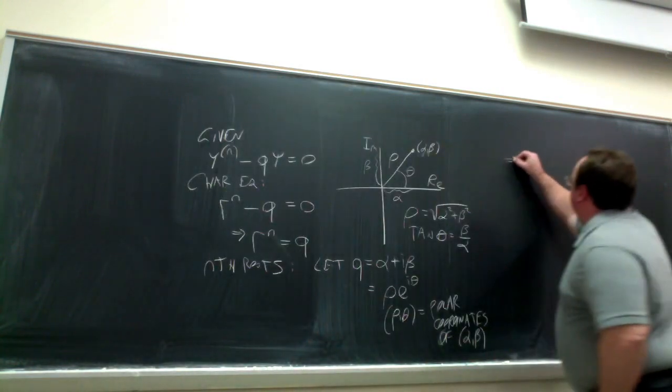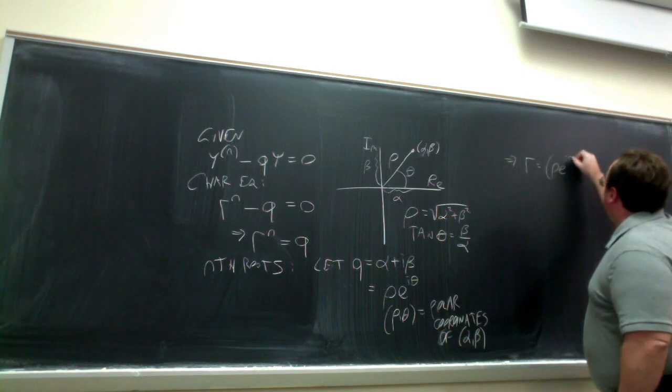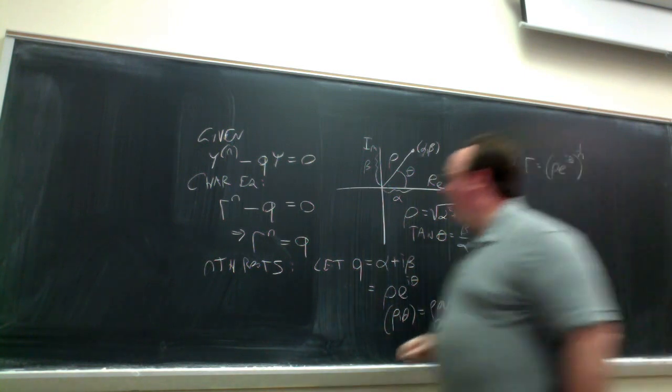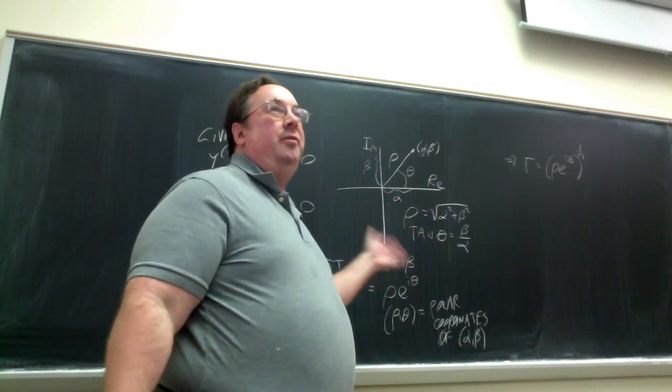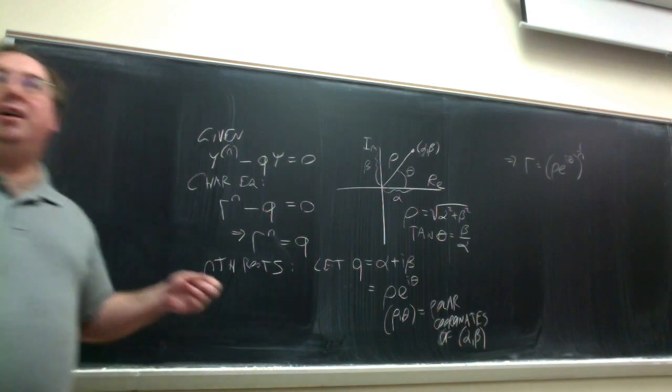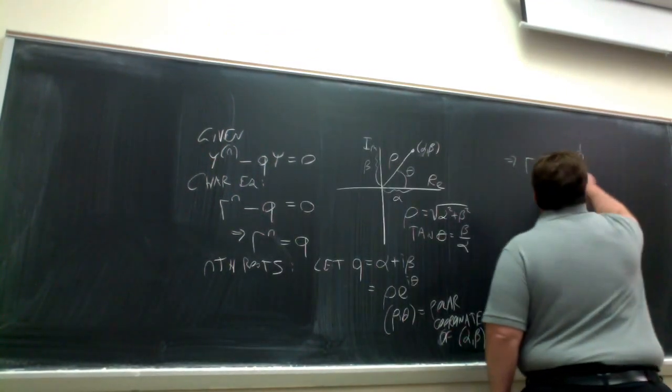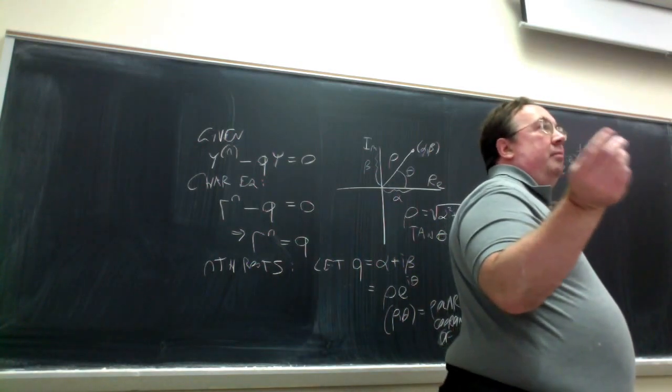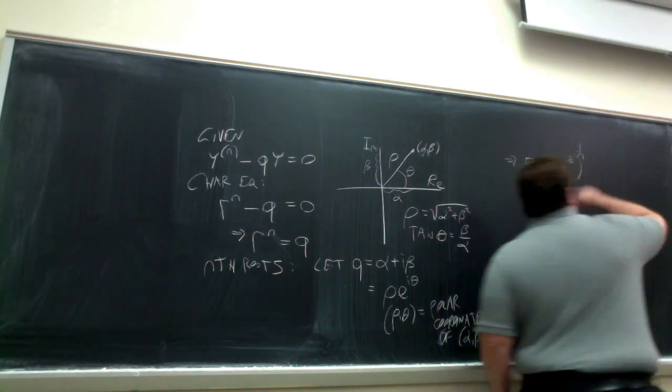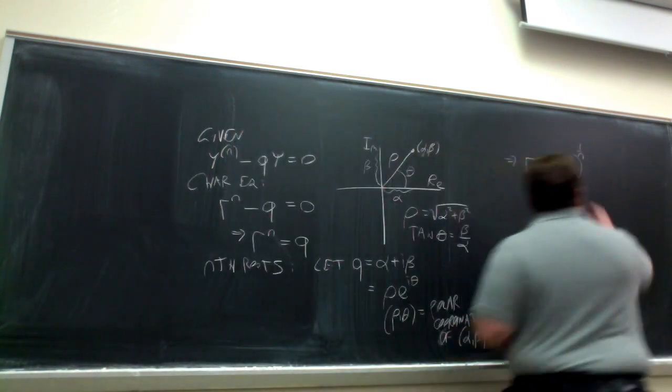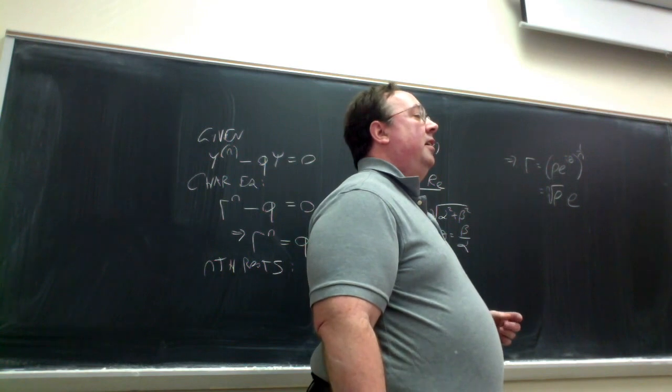But now we want the roots. So R is equal to, the roots that we want are equal to this number, rho e to the i theta, raised to the 1 over n power. But we want to express all the solutions to that, not just the one that we customarily get. In actual problems, the only values you would ever encounter for theta are 0, if Q is positive, and pi, if Q is negative. But this will cover everything. So if we just go ahead and raise this whole expression to the 1 over n power, rho is a non-negative real number, so you just take the ordinary nth root. And what happens with this part when you're raising that to the 1 over n? Remember your laws of exponents. I theta over n. Yeah, i theta over n.